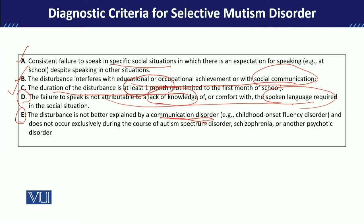Additionally, consider whether there is a communication disorder such as an articulation problem or a structuring problem that may be causing the child to be very quiet and unwilling to speak in certain situations. Also keep in mind whether the absence of speech in class could be due to autism, which involves stereotypical behaviors, or due to schizophrenia or another psychotic disorder, in which poverty of speech develops and the person does not or does not like to talk. All these factors must be ruled out before diagnosing a child with Selective Mutism Disorder.